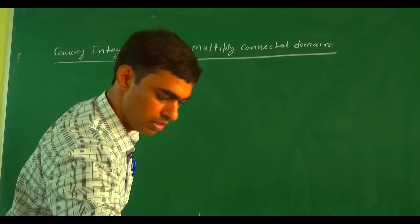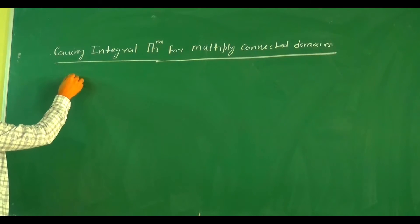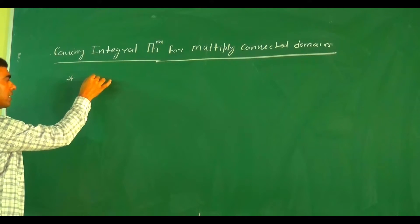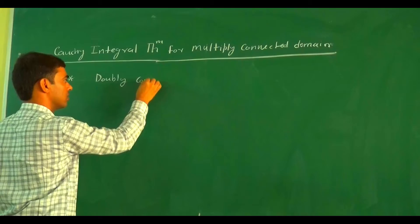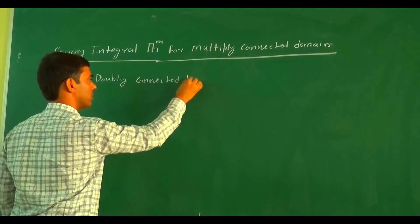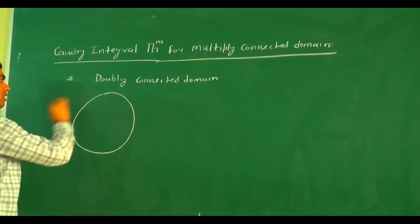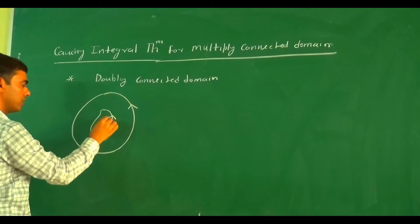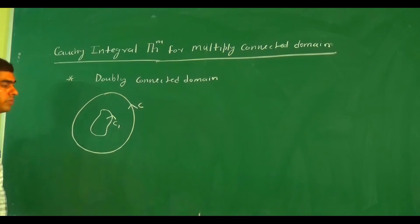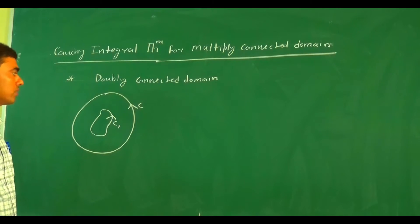We first take a doubly connected domain. Suppose this is a curve C and here is another curve C₁, with their respective orientations. This is a doubly connected domain D₁ — one domain inside another.